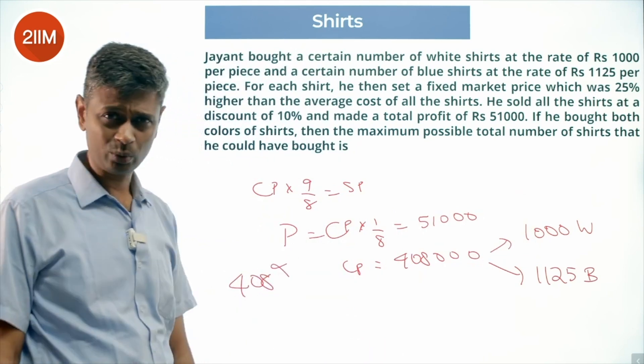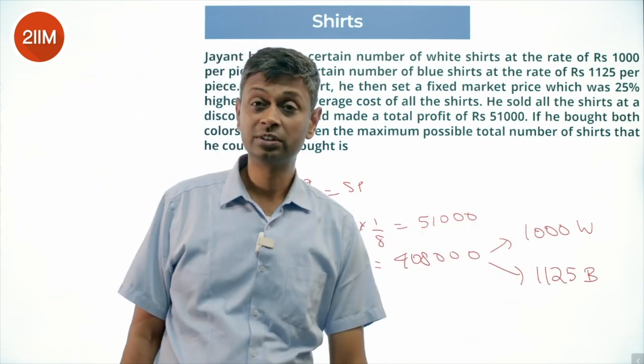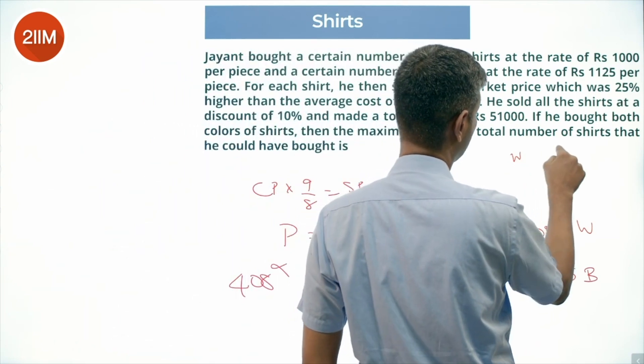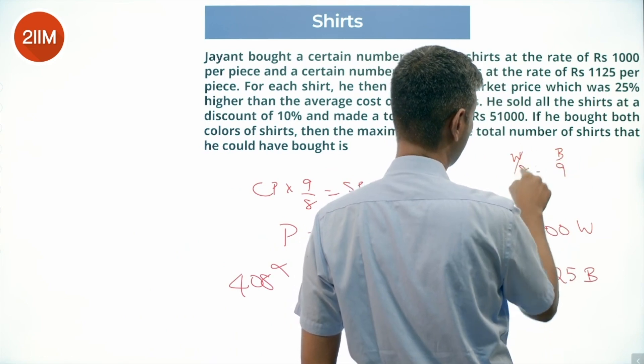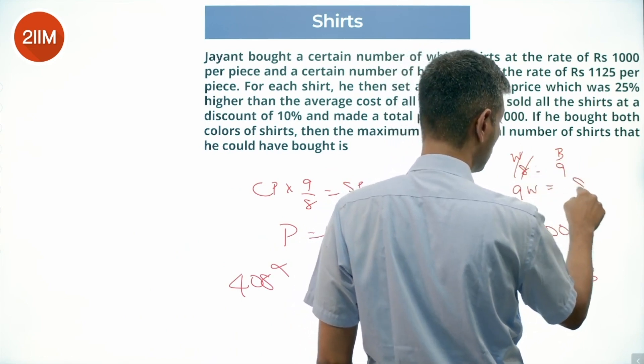He needs to replace a few white shirts with blue shirts such that the cost remains the same. The ratio of white price to blue price is 8:9. So the cost of 9 white shirts equals the cost of 8 blue shirts.